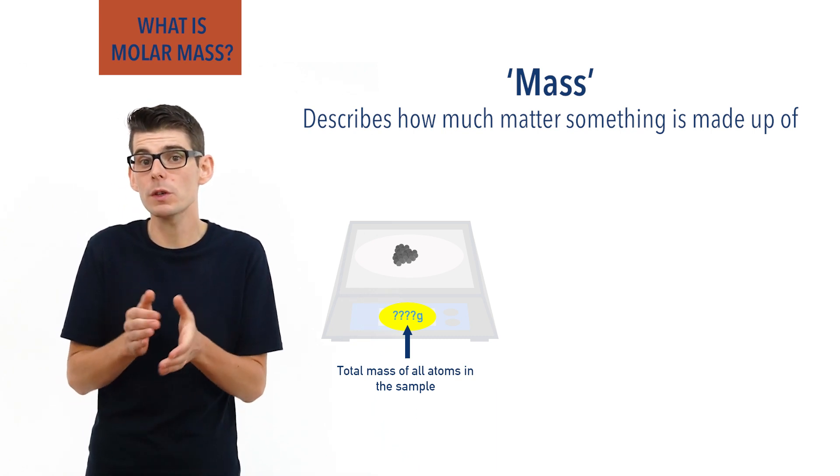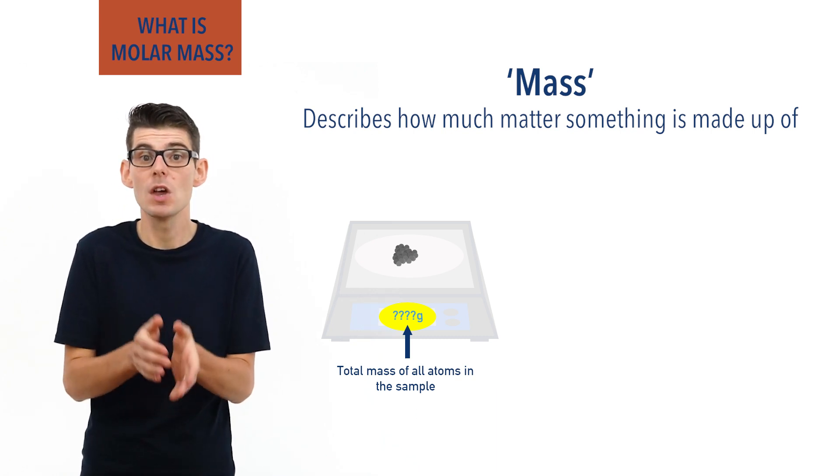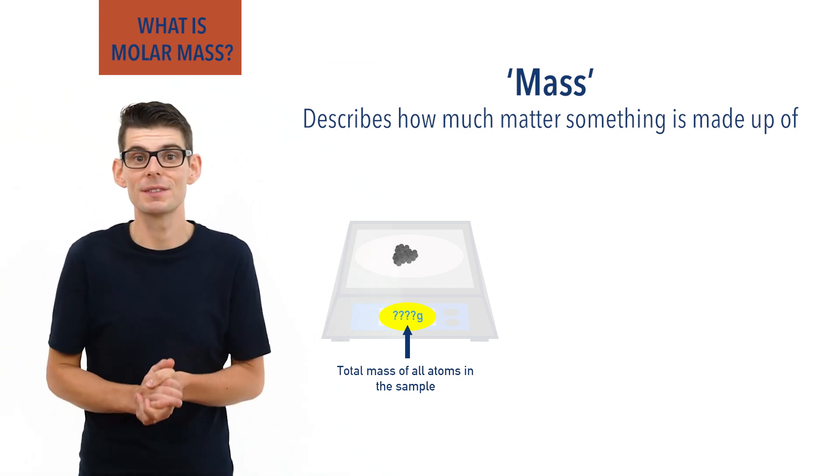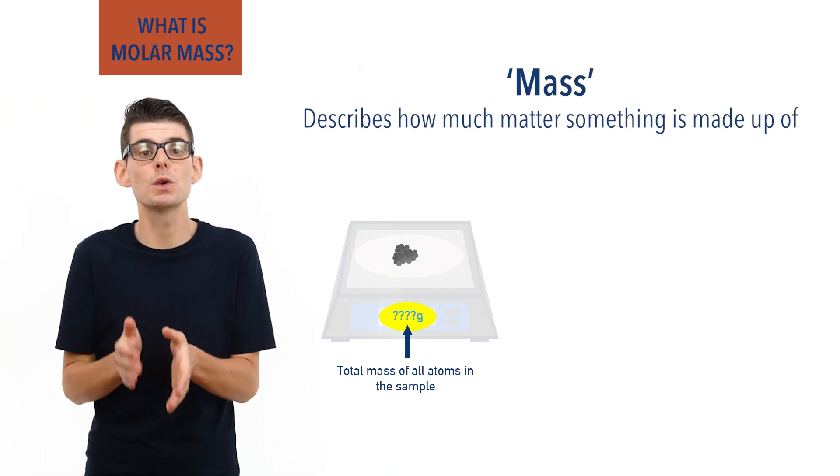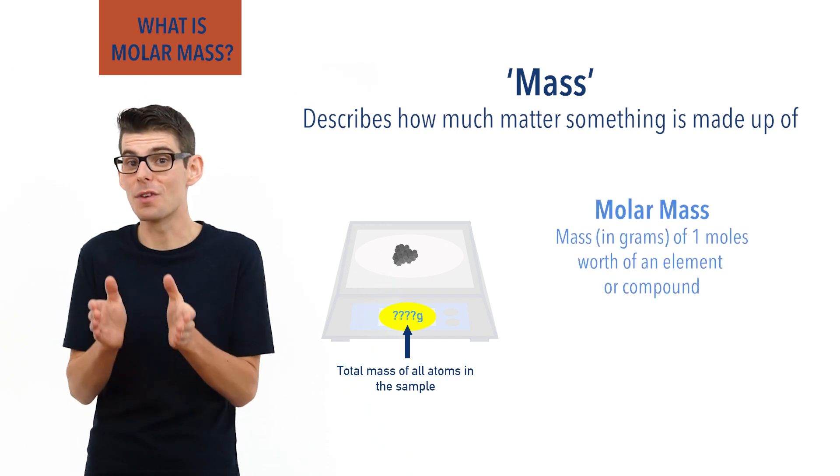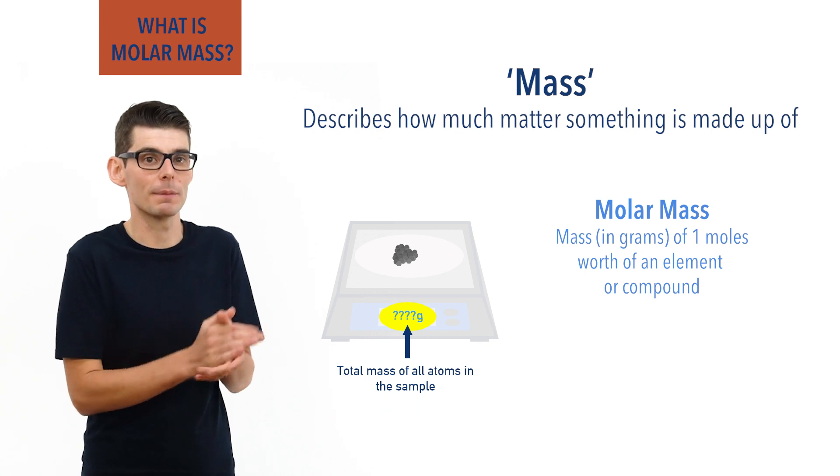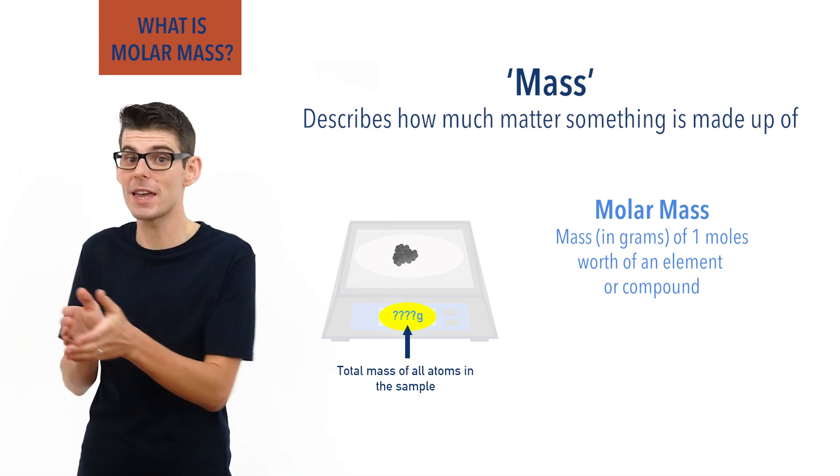For this, we also need to know the mass in grams of one mole's worth of atoms of each element in the substance. This value is called molar mass and, rather usefully, is the same value as an element's relative atomic mass. They aren't, however, the same thing.